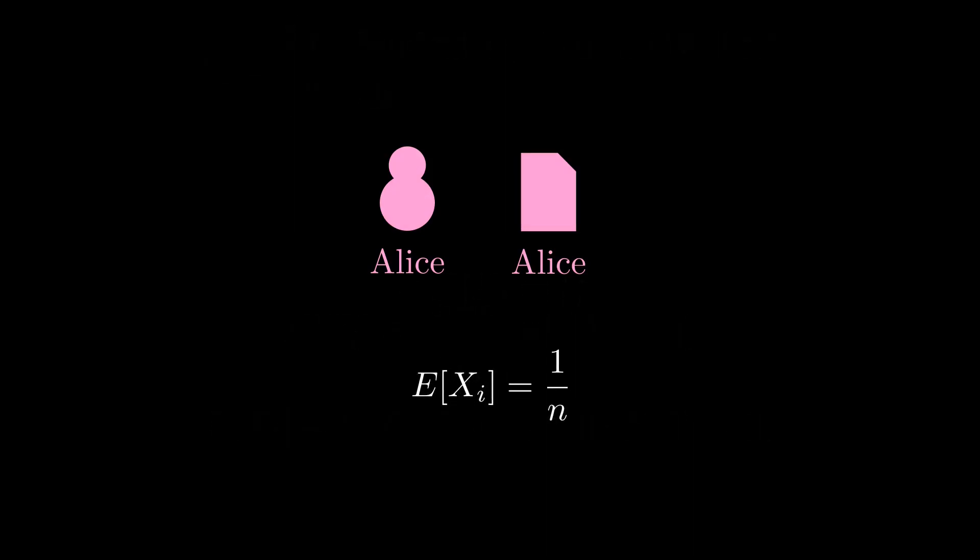The same is true for every student. E of X sub 1 equals E of X sub 2 and so on. They all equal 1 over n.